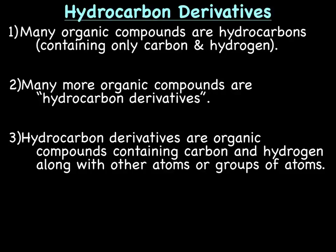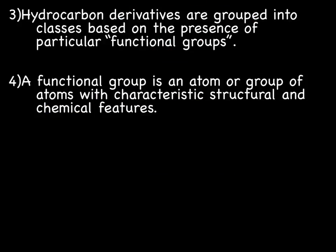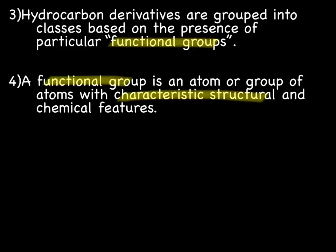Hydrocarbon derivatives. Many organic compounds are hydrocarbons, meaning they contain only carbon and hydrogen — these are the alkanes, alkenes, and alkynes we've been talking about. But many more organic compounds are actually hydrocarbon derivatives, meaning they contain carbon and hydrogen, but one or more of the hydrogens is replaced by other atoms or groups of atoms. Hydrocarbon derivatives are grouped into classes based on the presence of particular functional groups, and a functional group is an atom or group of atoms with characteristic structural and chemical features.